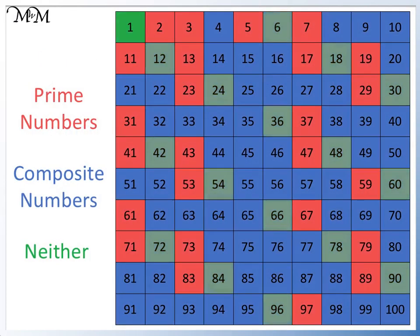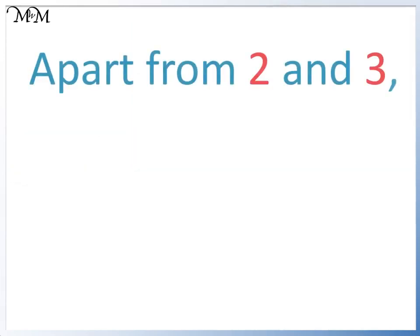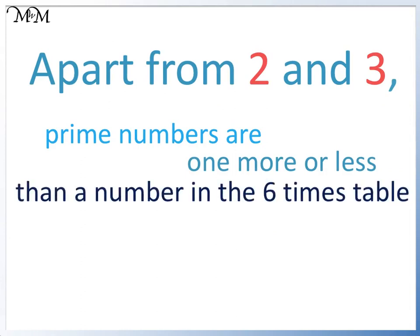On our number grid, we can mark the 6 times table in yellow. We can look at where the prime numbers are compared to the yellow 6 times table. Apart from 2 and 3, the other prime numbers are directly before or after a number in the 6 times table: 5 and 7, 11 and 13, 17 and 19, 23, 29 and 31, 37, 41 and 43, 47, 53, 59 and 61, 67, 71 and 73, 79, 83, 89 and 97. So apart from 2 and 3, prime numbers are 1 more or less than a number in the 6 times table.